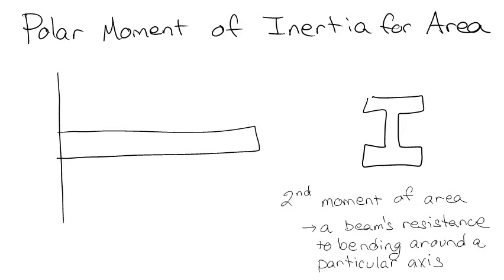All right, so in another video we looked at something called the second moment of area, which is basically a beam's resistance to bending around a particular axis. So this time, in this particular video, we are going to look at polar moment of inertia for area. We also call it the second moment of area, but it's for polar, around a specific axis. I'll show you, you'll see what I'm talking about.